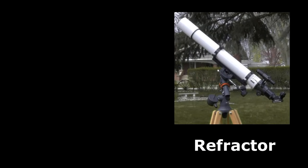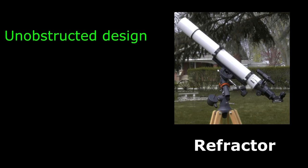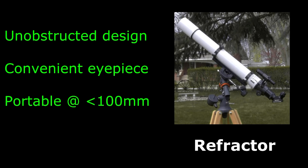Let's take a quick overview of the strengths and weaknesses of each. For refractors, here are some advantages. Unobstructed design and ease of manufacture allows for theoretically better optical quality. Eyepiece location is convenient in smaller models. They tend to be portable in apertures of 100mm or less and are easy to aim.